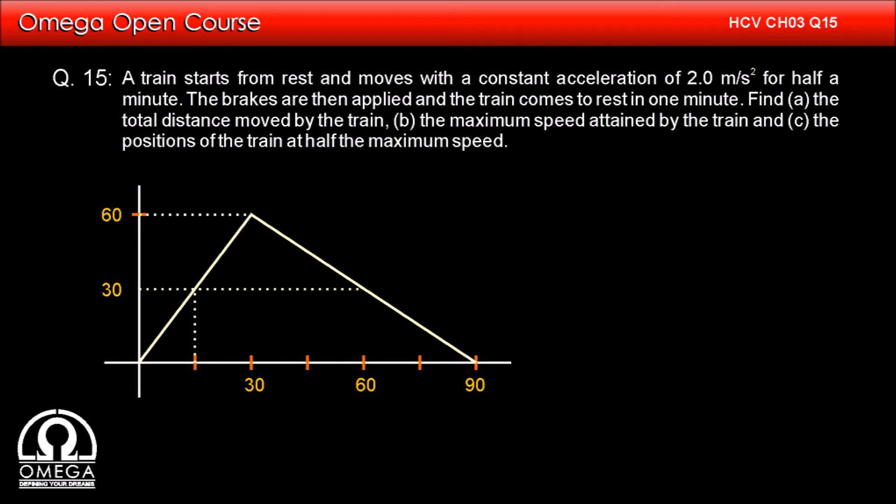As can be seen in the graph and easily deduced from similarity, this line intersects the graph at t = 15 seconds and 60 seconds. The position of the train at 15 seconds will be the area of the shaded region, that is half × base × height, that is half × 15 × 30, that is 225 meters.